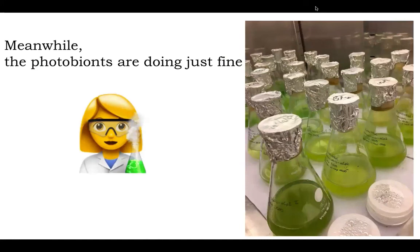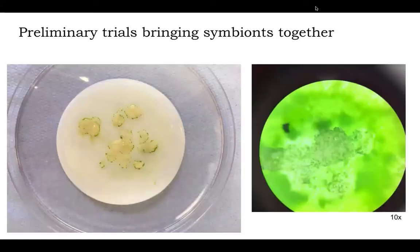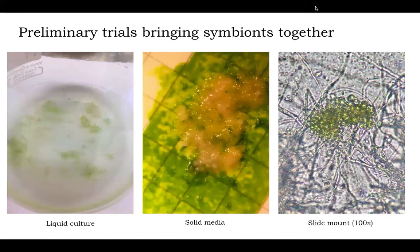I ran some experiments during my postdoc to pull these lichens apart — specifically the two main partners — bring them back together, and see what's happening. Here are some images from preliminary trials. We can see that there are some potential interactions taking place. But in none of these images do you see anything like the Xanthoria parietina thallus that I showed you earlier. So there are definitely some components missing. We were looking at gene expression of these different components — both in isolation and together, as well as within the lichen thallus — and this has been done by other groups with other species of lichen.